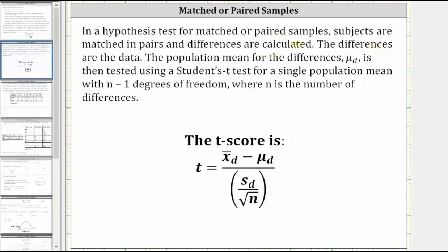The population mean for the differences mu_d is then tested using a Student's t-test for a single population mean with n minus one degrees of freedom, where n is the number of differences.